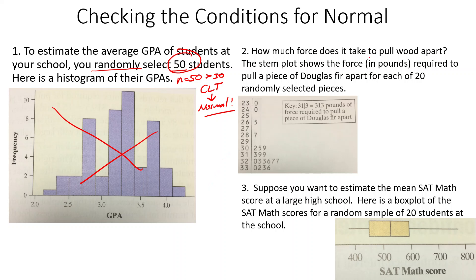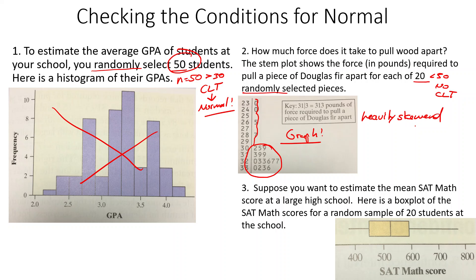Next example: how much force is required to pull wood apart? The stem plot shows the force in pounds for each of 20 randomly selected pieces of Douglas fir. Since n equals 20, which is less than 30, we're not using the Central Limit Theorem — we have to look at the graph. Looking at the stem plot, most of the data is clustered in one area, and it appears to be heavily skewed, possibly with outliers. Since it's heavily skewed, this condition is not met. We would need a bigger sample size.